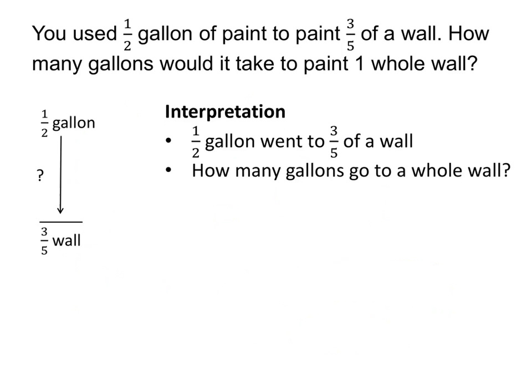Let's step back and look at that picture more carefully, because it may not be completely intuitive at first. The picture says that one-half of a gallon went to three-fifths of a wall, and the question is how many gallons go into one whole wall. That's what the picture represents.